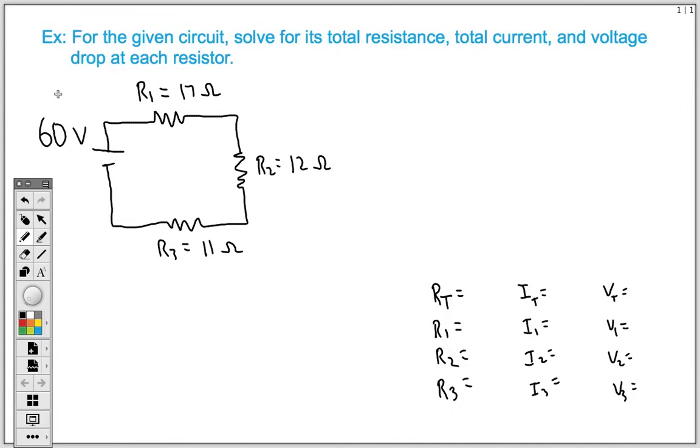Before we begin with these series circuits, quick review here with our circuit diagram. How do we know that this is a series circuit? Well, if you recall, a series circuit, the electricity only has one path that it can follow. As we take a look at this circuit diagram, we can see that the electricity only has one path to follow.